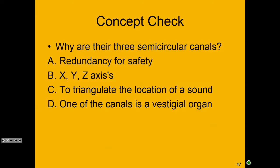Concept check: why are there three semicircular canals? Options: A — redundancy for safety; B — they correspond with X, Y, and Z axes; C — to triangulate the location of sound; D — one canal is vestigial. The answer is B: the three semicircular canals correspond to the X, Y, and Z axes — or the three dimensions of space — allowing us to better understand our dynamic equilibrium as we move through three-dimensional space.